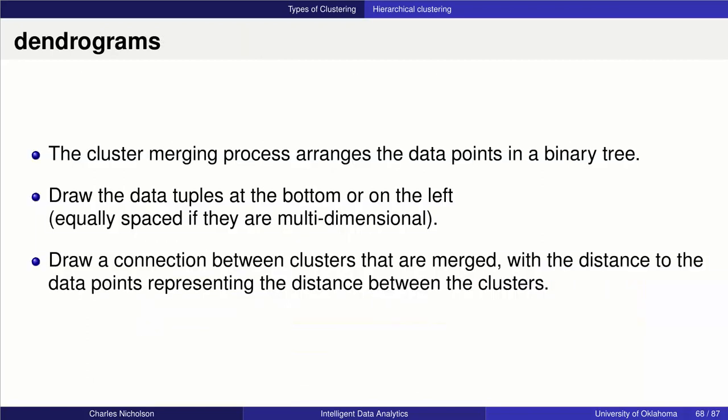The dendrogram is the primary visualization for hierarchical clustering. The cluster merging process arranges the data points in essentially a binary tree. When two clusters are merged, the distance between those two objects or clusters is represented by the height of the tree at that merging point. Let's look at an example.